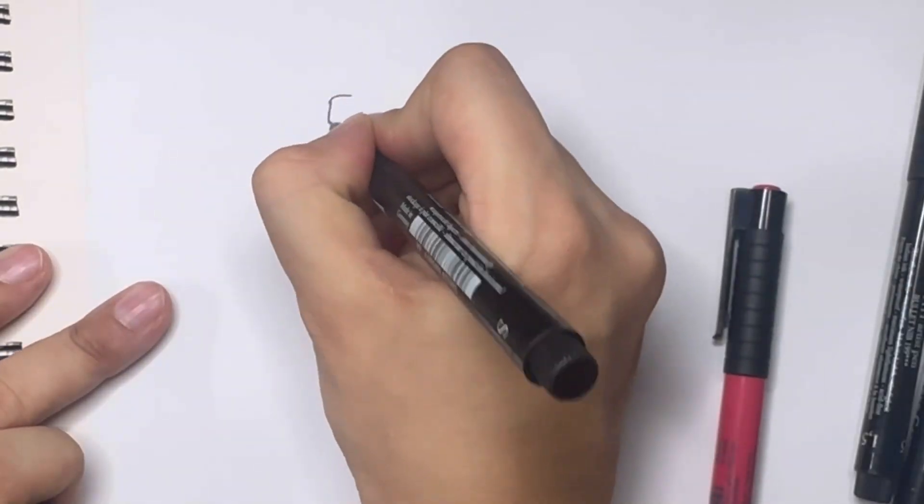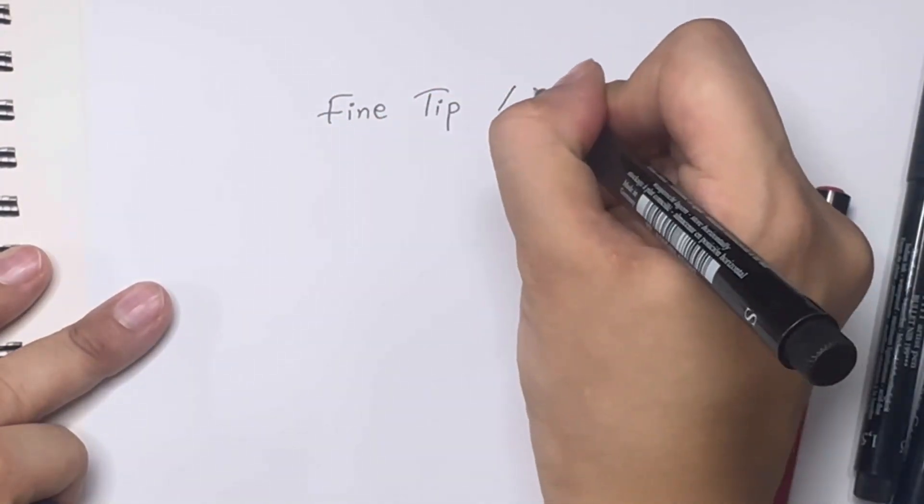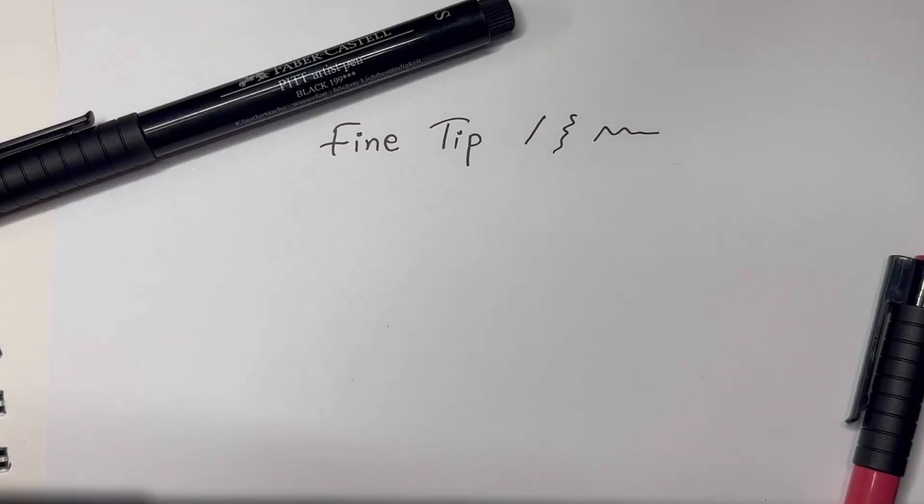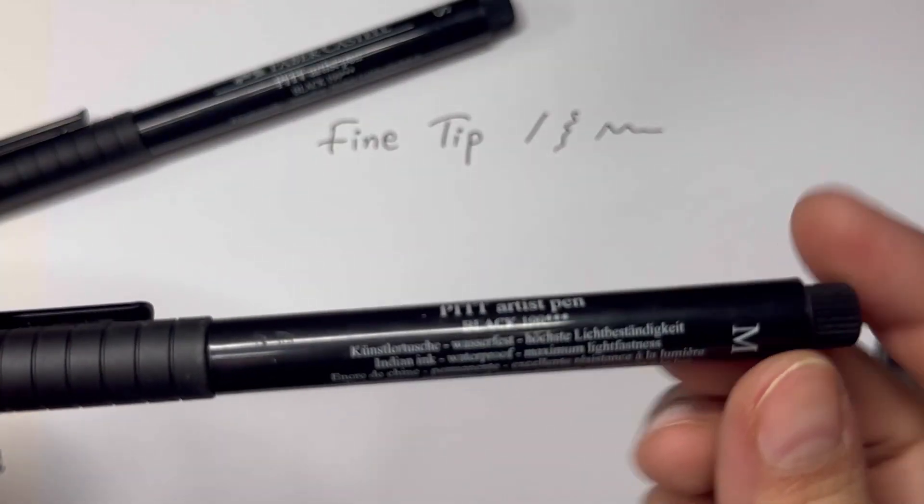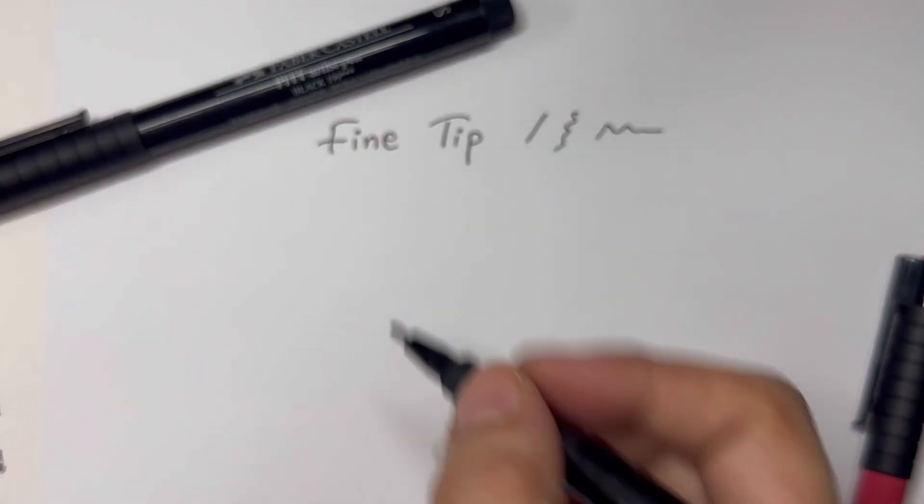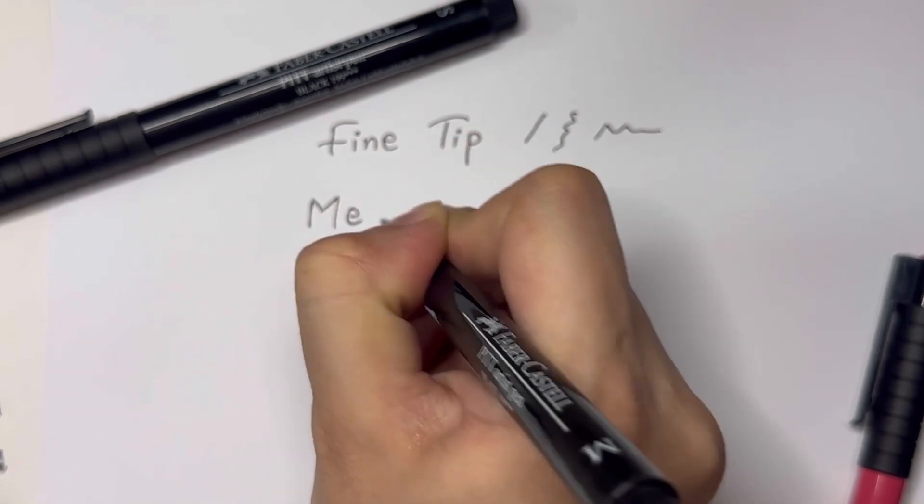It is a fineliner and you can use it for mandala art and fine work. The second we have is the M, again this is a fineliner and you can use it for mandala and fine work. It is a little bit thicker than the first tip.